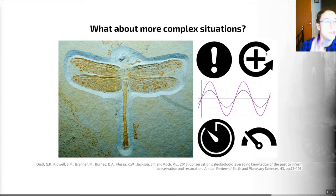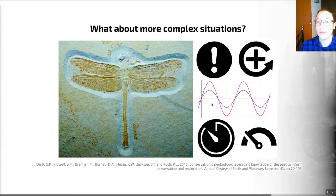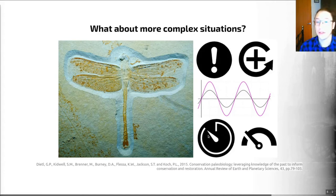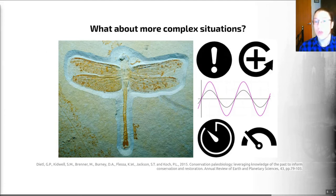The fossil record can reveal feedbacks that have stabilised systems in the past. Fossils can help us recognise interactive effects amongst multiple stressors — those could either amplify each other or dampen each other, depending on how they interact. The fossil record can also help us gain insight into the duration of lag effects in ecosystem response: if you apply a stressor, how long does it take until that has an impact on the things alive in that ecosystem? And it can help us assess controls on slow processes in ecosystems that we can't observe in modern ecosystems today.